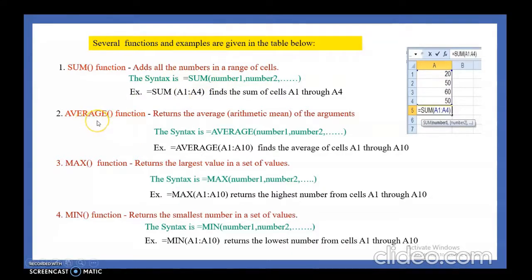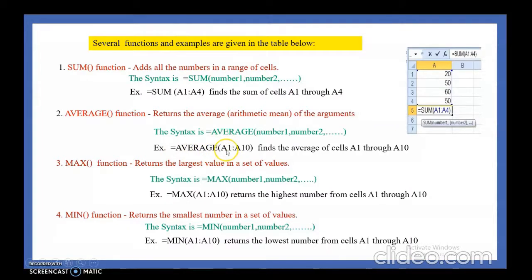The second function is the AVERAGE function. It is used to calculate the average — that is, the arithmetic mean — of a group of numbers. The values given inside the bracket of the function are called arguments. To use it: type equal to AVERAGE, then open bracket, then starting cell address, colon, last cell address. For example, A1:A10 will display the average of numbers from A1 to A10.